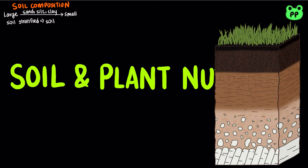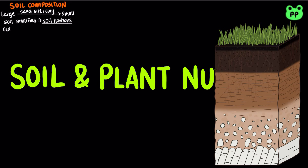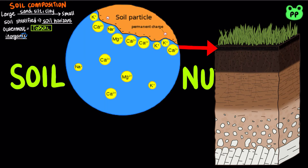Soil is stratified into layers called soil horizons. The outermost layer, known as topsoil, consists of inorganic components such as potassium, calcium, and magnesium cations that stick to negatively charged soil particles. This adhering of cations prevents them from leaching out of the soil through percolating groundwater.